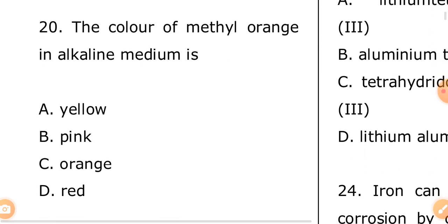Question twenty: the color of methyl orange in alkaline medium is — A: yellow, B: pink, C: orange, D: red. We will continue from question twenty in part two of these chemistry past questions.